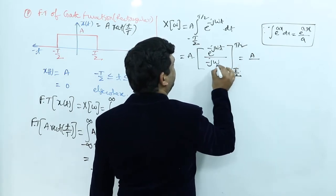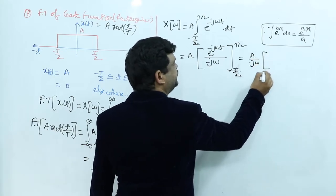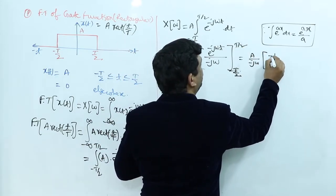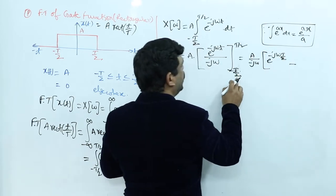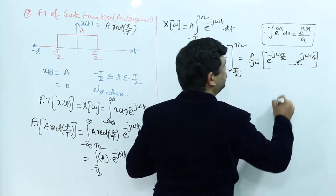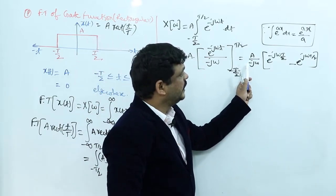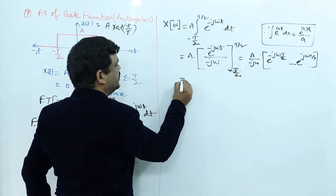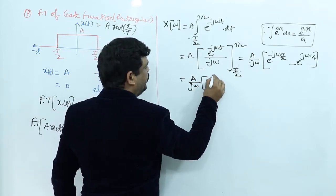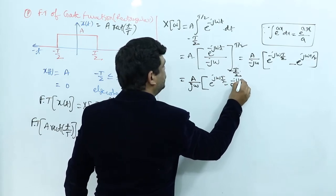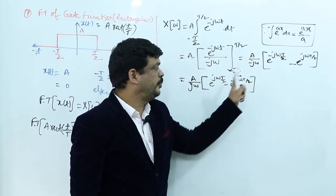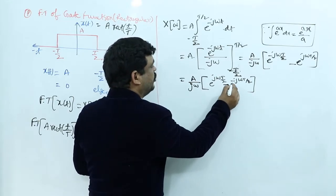Taking A/(−jω) and multiplying the minus sign inside the bracket, the expression becomes A/(jω) · [e^(jωT/2) − e^(−jωT/2)]. So finally we have X(ω) = A/(jω) · [e^(jωT/2) − e^(−jωT/2)]. Now we need to simplify this further using Euler's formula identities.